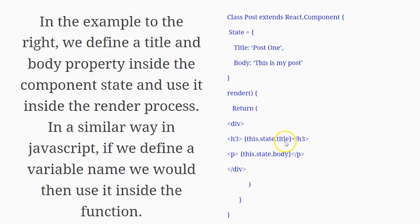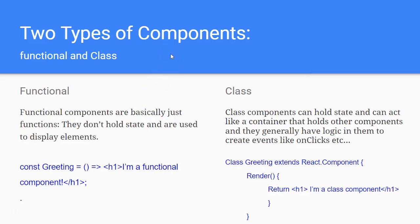Let's talk about the two types of components: functional and class. Functional components are functions — they don't hold state and they're used to display elements. A functional component is when you just want to see something that isn't going to change, like a div with static information where no one's clicking or inputting anything.